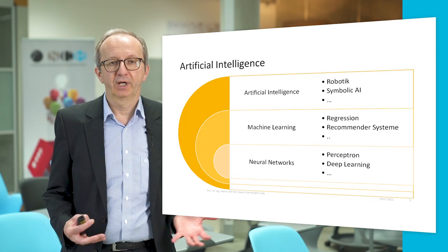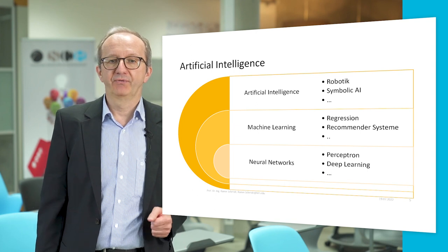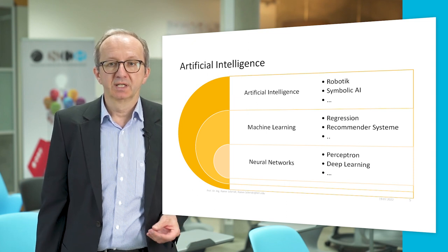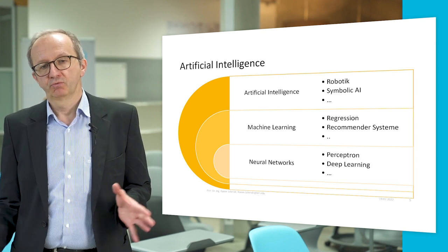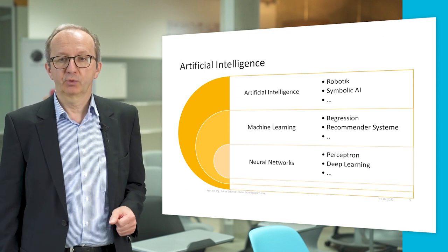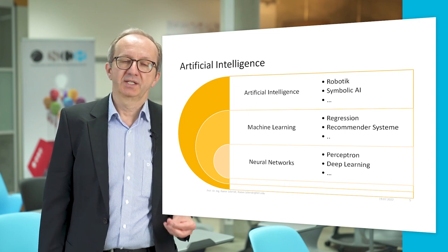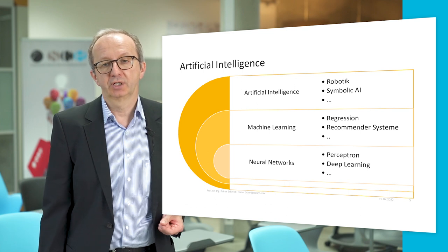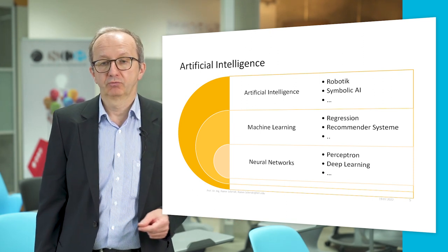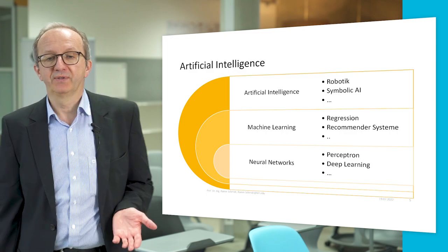The area of artificial intelligence is very wide. There is artificial intelligence in a very broad sense, where we also find subjects such as robotics and symbolic AI. Within that we find machine learning, with mechanisms like regression and recommender systems. And then there are neural networks — the area that got most attention in the last years because of huge advances. For example, we now have machine translation that achieves human performance in many situations.